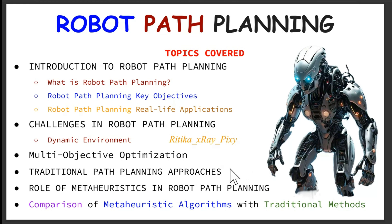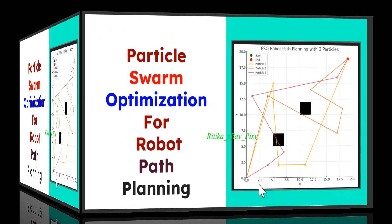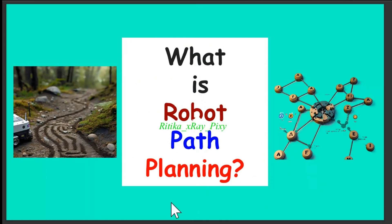Then we have different traditional path planning approaches — classical algorithms used for robot path planning. We will compare traditional methods with metaheuristic optimization algorithms and learn how metaheuristics are more suitable for robot path planning, covering their benefits, importance, and role, using different examples.